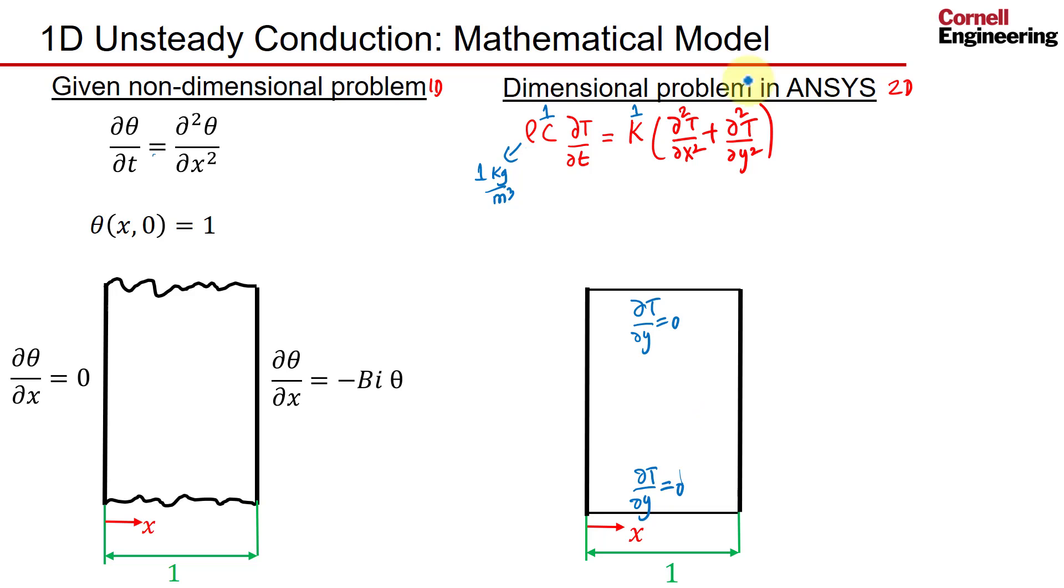Essentially, that's the way you zero out that term. So everything looks like the non-dimensional problem, and the only thing left is the initial condition. We'll set T everywhere at time equal to 0 to be 1, and in ANSYS, everything is dimensional, so it'll be 1 degree Celsius.